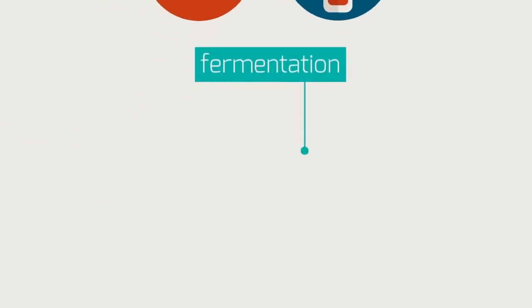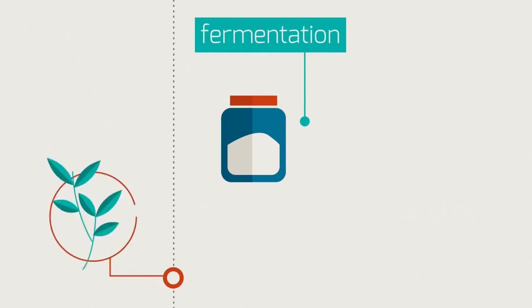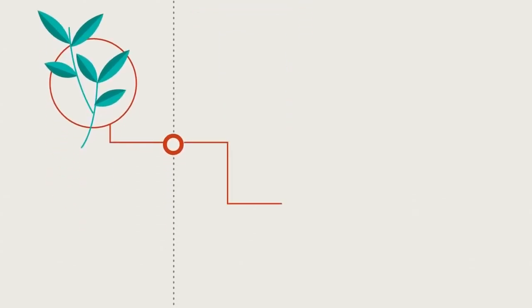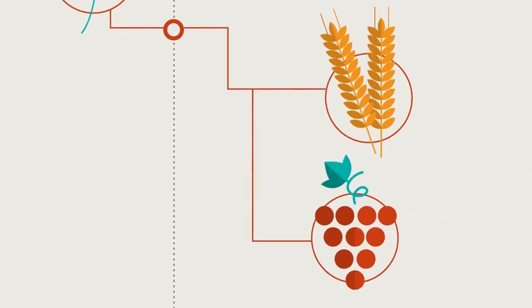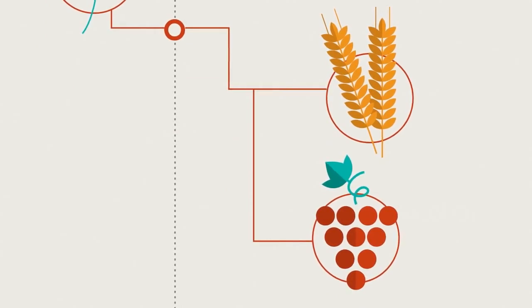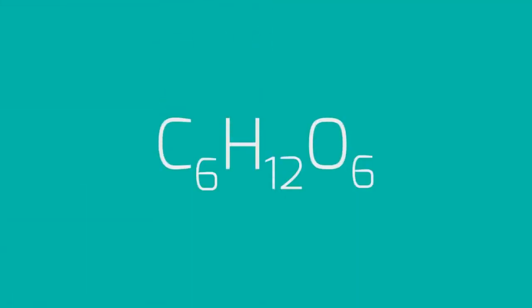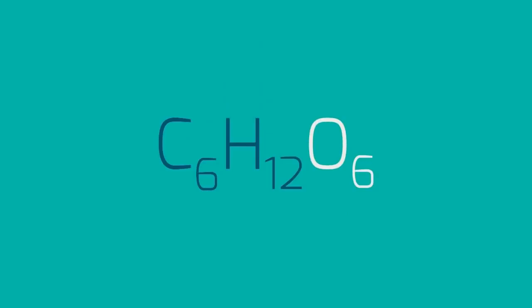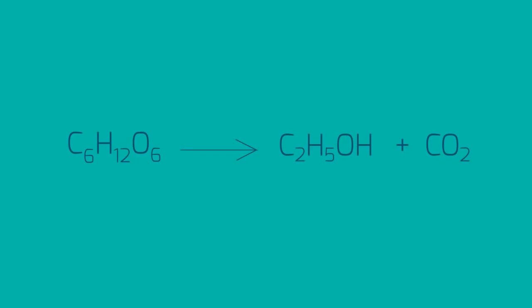The reactant in fermentation is sugar. It comes from natural plant extracts, barley in beer making, and grapes in wine making. These sugars have the general molecular formula C6H12O6. Fermentation converts them into ethanol and carbon dioxide.